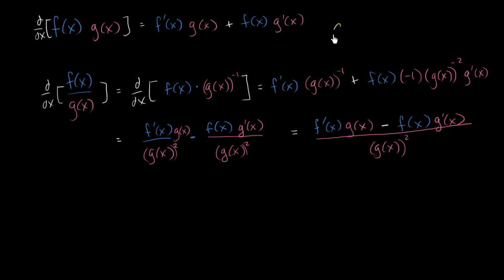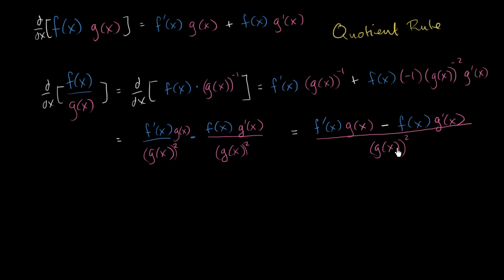In the last video, we saw that the quotient rule, which I have mixed feelings about, because it really comes straight out of the product rule. If we have something of the form f of x over g of x, the derivative of it could be this business right over here. So I thought I would at least do one example where we can apply that, and we could do it to find the derivative of something useful.